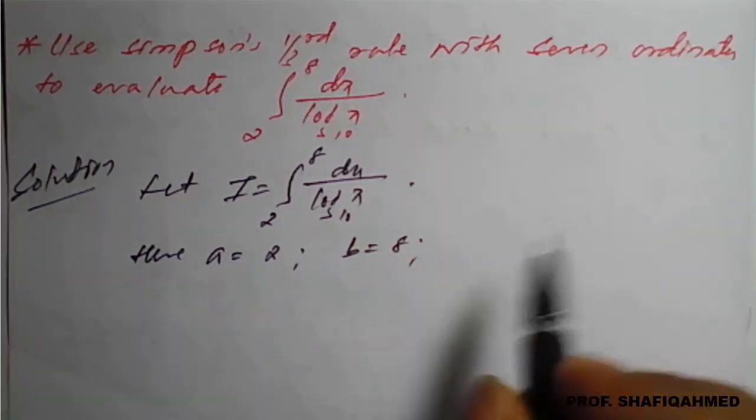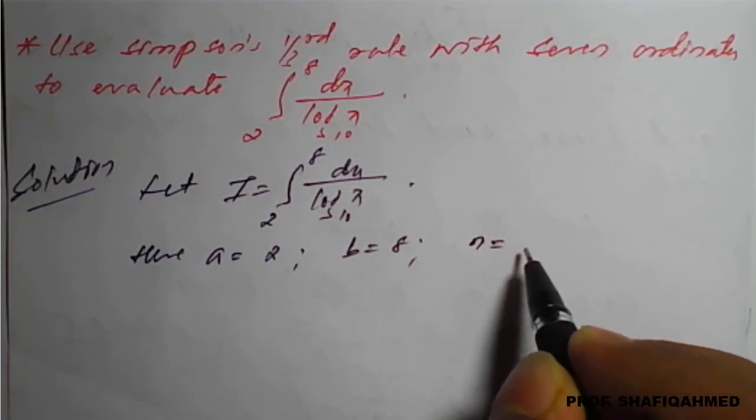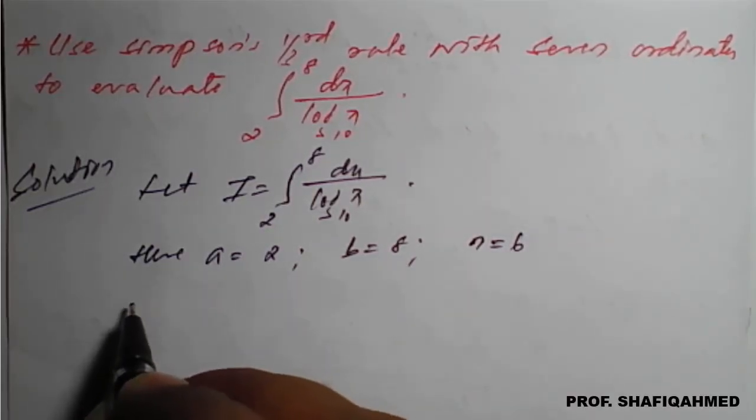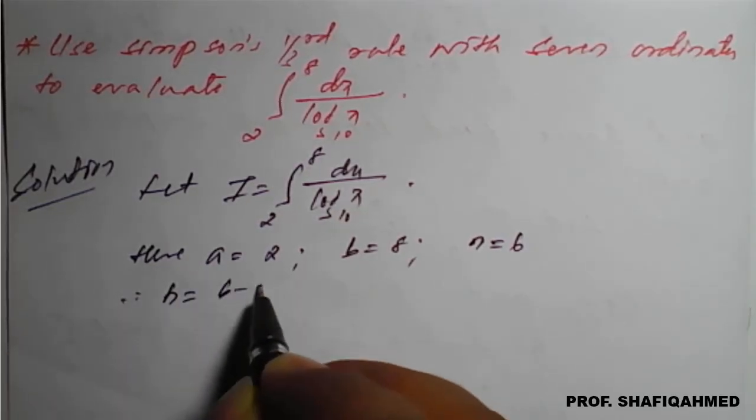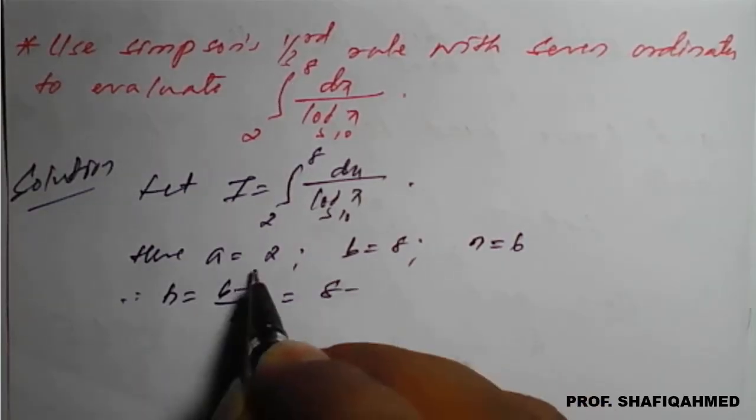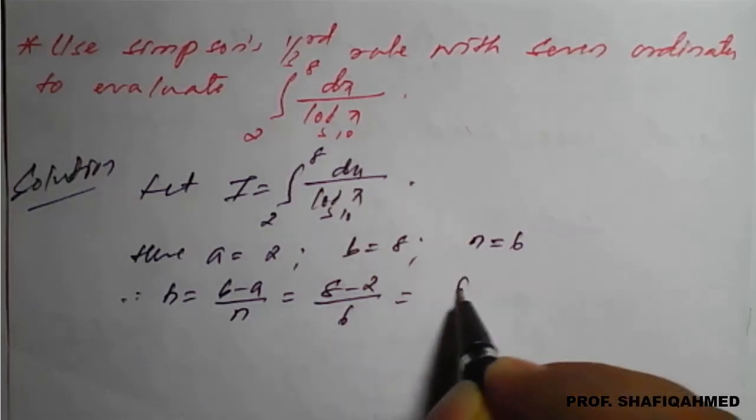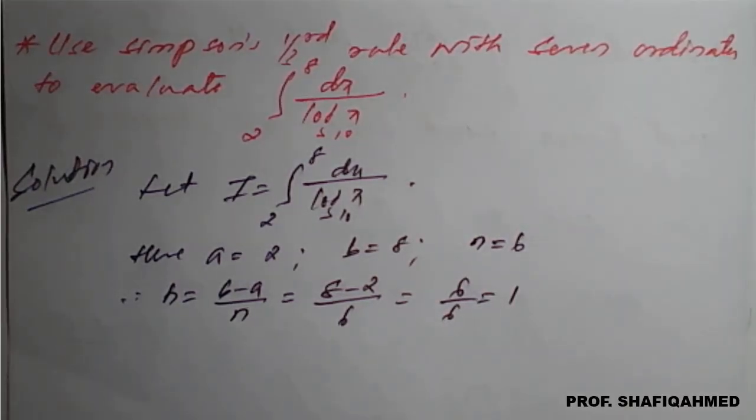They have said 7 ordinates, which means one less, so n equals 6. We need to calculate the value of h. Therefore, h equals b minus a divided by n, so h equals 8 minus 2 divided by 6, which equals 6 divided by 6, which is 1. So we got h is 1.